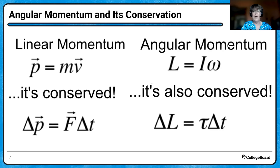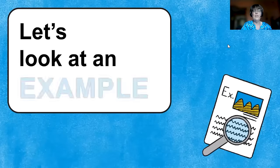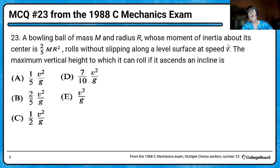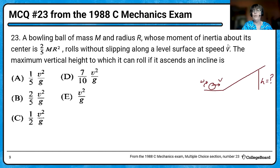So these are the principles behind what we're going to do today. Here's a problem from the 1988 exam. You have a bowling ball — given the mass, radius, and moment of inertia. It's a solid sphere, so two-fifths MR squared. It's rolling without slipping along a surface at a speed of V, and it encounters an incline. They want to know how high up vertically that bowling ball will reach. The bowling ball is both translating with a linear speed of V and angularly rotating with an angular speed of omega.